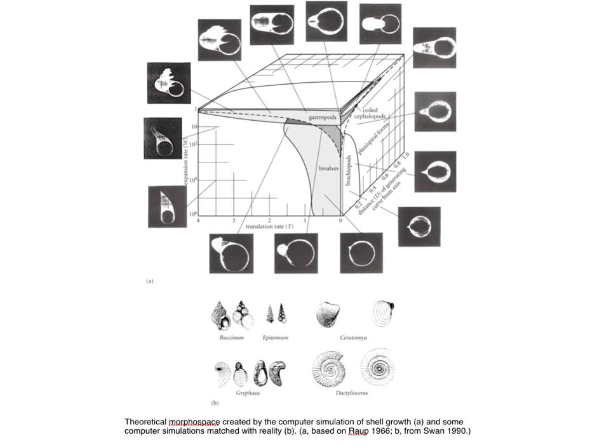And here's just another diagram. I think this is from your textbook now showing, again, basically the same thing, that actual species are not randomly distributed, that there are constraints within the spectrum.